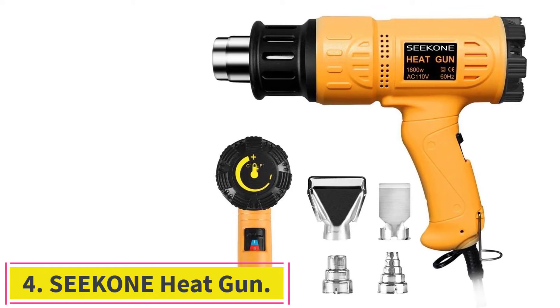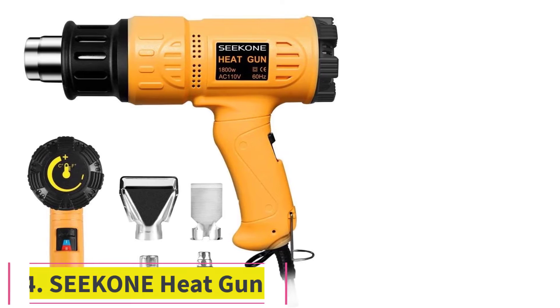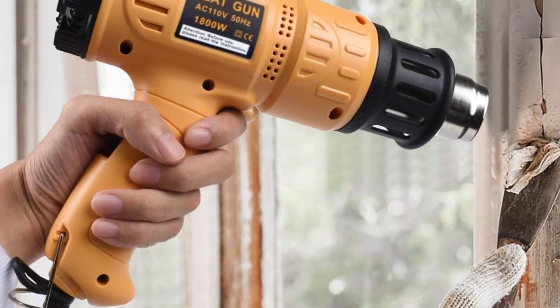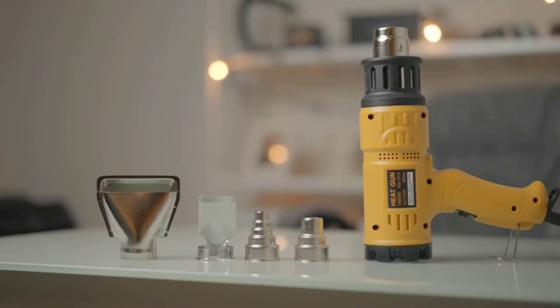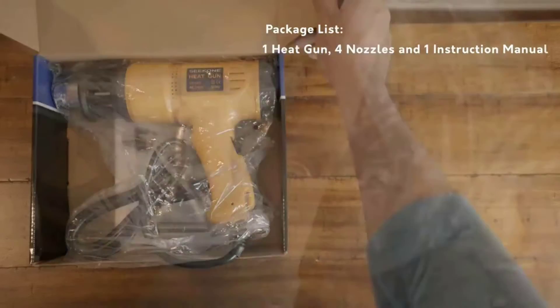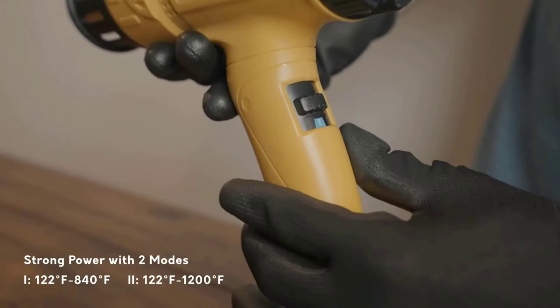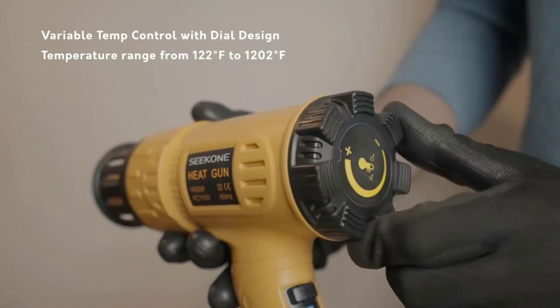Number 4. Seacone Heat Gun. Strong power with two modes. Seacone 1800W heat gun provides strong power quickly heat up to 1202 degrees Fahrenheit, 650 degrees Celsius, in 1.5 seconds. Two modes: I-50-450 degrees Celsius, 190-210 liters per minute. Two, 50-650 degrees Celsius, 250-500 liters per minute.